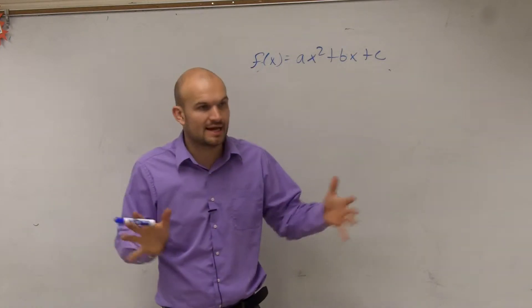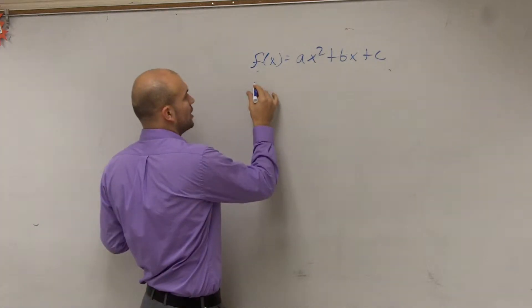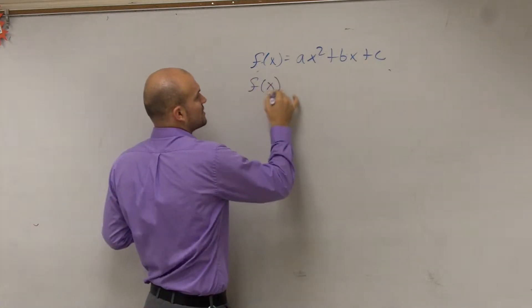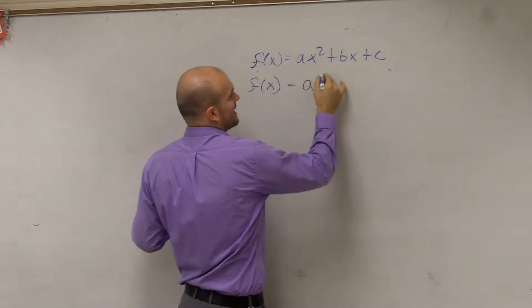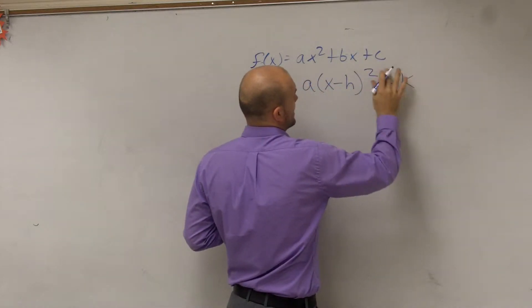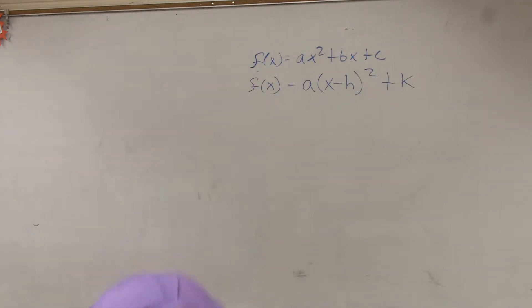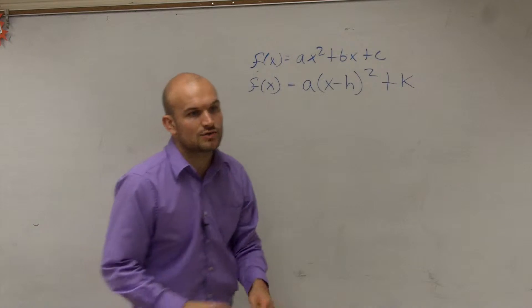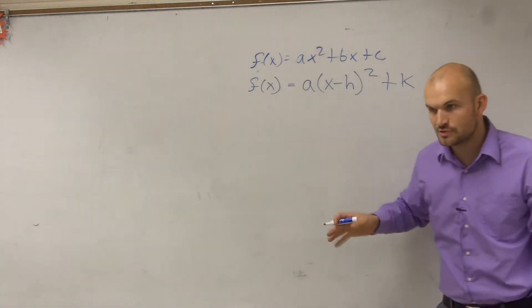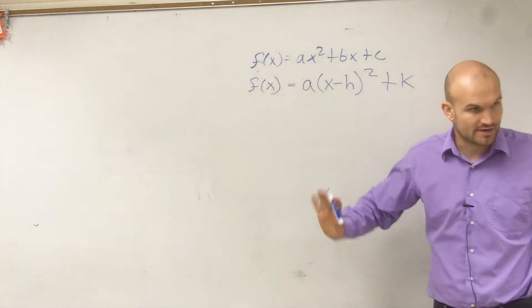So we will learn later today how to go from this form of a quadratic to what we call vertex form, which is right here. This form says a times x minus h squared plus k. These are duplicate forms of a quadratic. They are going to produce the exact same graph. There's no difference.